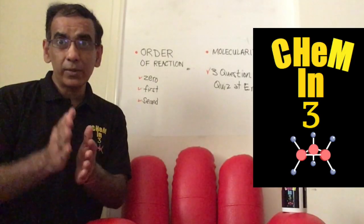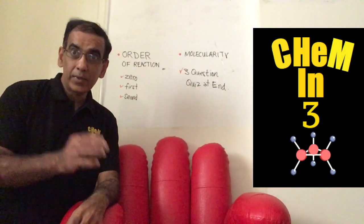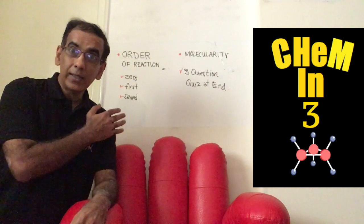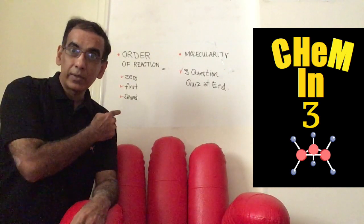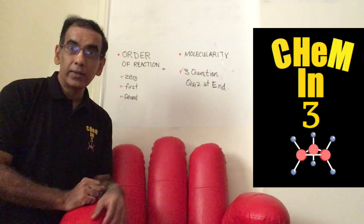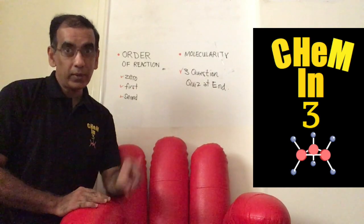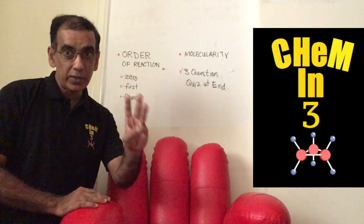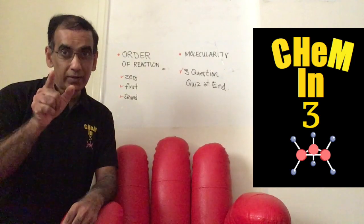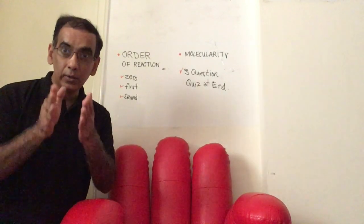Hello and welcome to another episode of Chem in Three. In today's episode, we look at order of reactions, taking a look at zero order, first order, and second order reactions. Then we also look at the difference between order and molecularity. And finally, we end up with a three-question quiz, so you need to watch all the way to the end of the lesson. Let's move in and take a closer look.